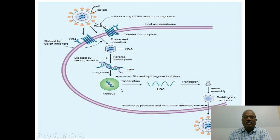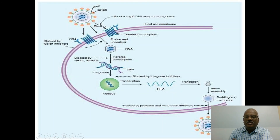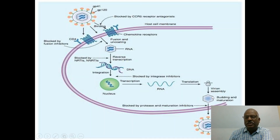Then it undergoes transcription, meaning DNA is converted into RNA. The RNA is by means of translation converted into protein. Then virion assembly, budding, and maturation occur. The budding and maturation can be inhibited by interferon.